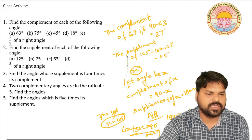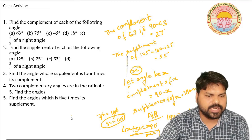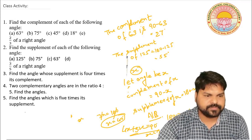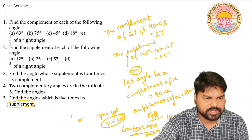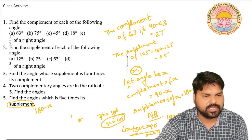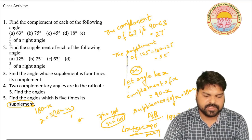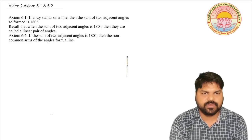Question 5: Find the angle which is 5 times its complement. We assume the angle to be x. The supplement of x is 180 minus x, and we are told it equals 5 times the complement. Set up and solve the equation accordingly. Thank you everyone, good luck, good day.